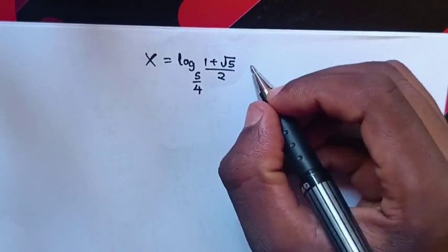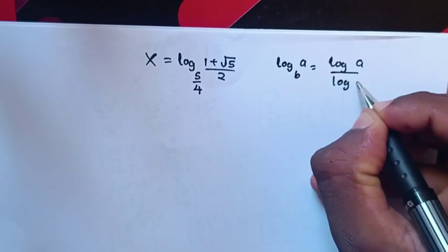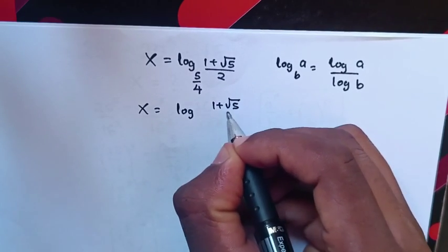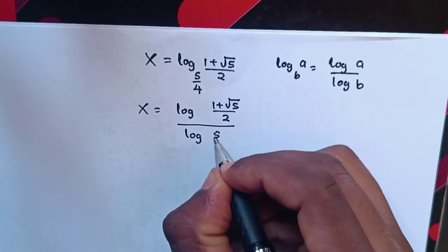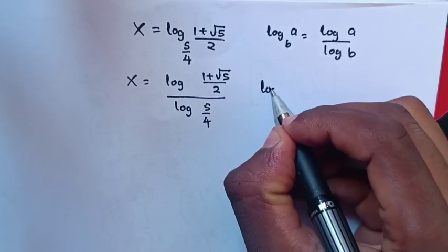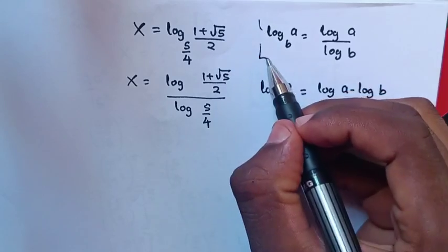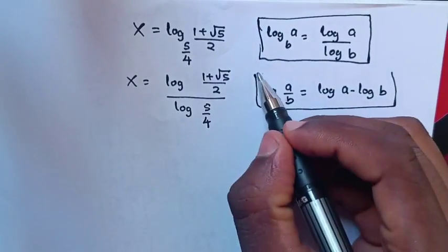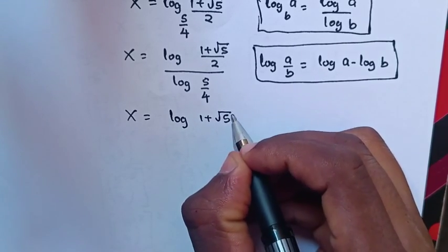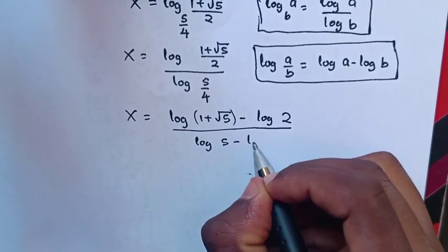From here we apply the log change-of-base rule, which is log of a base b equals log of a over log of b. So x will be equal to log of (1 plus square root of 5) over 2, divided by log of 5 over 4. Then we apply the rule log of a over b equals log a minus log b, giving x equal to log of (1 plus square root of 5) minus log 2, over log 5 minus log 4.